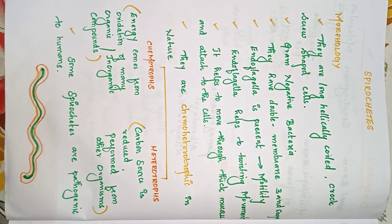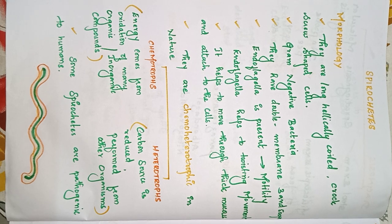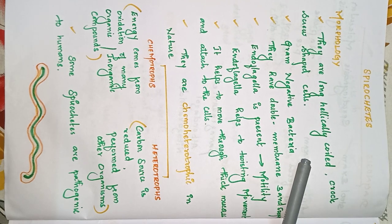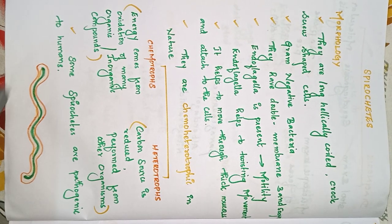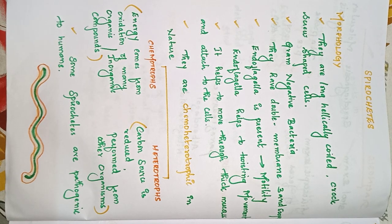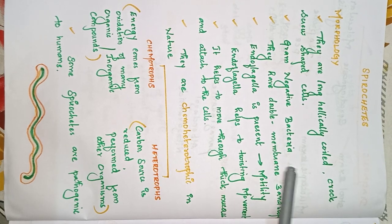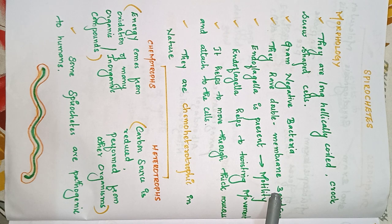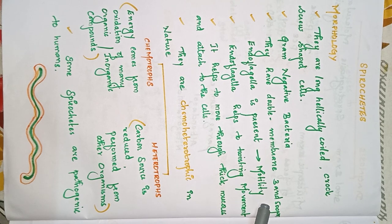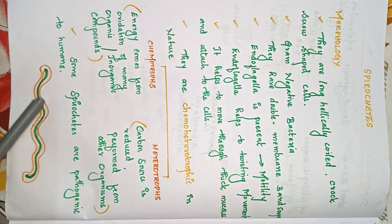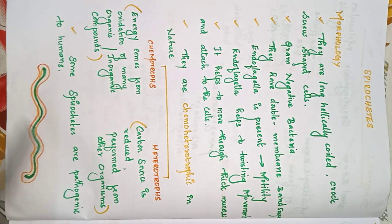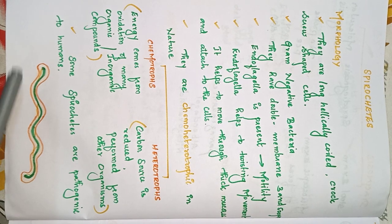In this video we'll be discussing spirochetes. Starting with morphology: they are long, helically coiled, corkscrew-shaped cells. Spirochetes are gram-negative bacteria with a double membrane. The orange color represents the first membrane and the green color represents the second membrane.